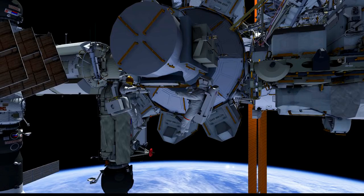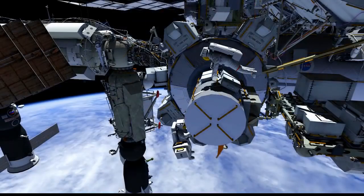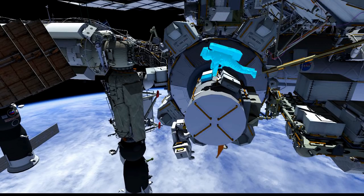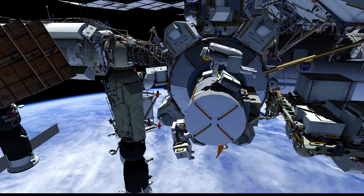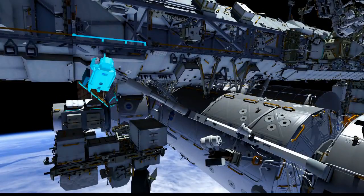Scott will bring out a crew lock bag that has all the tools from inside the space station that they'll need to use on this EVA. Chell will pick out a vent tool bag that's on the zenith portion of the crew lock, and he'll take that out to the work site.